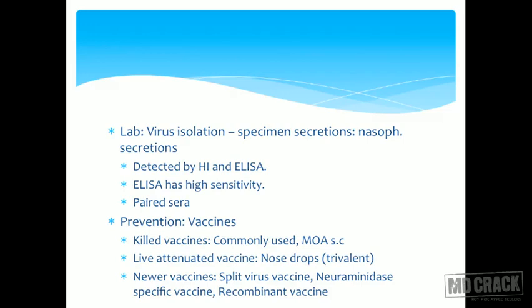For laboratory investigations, virus isolation is done from nasopharyngeal specimens. The tests used are the hemagglutination inhibition test and ELISA, with ELISA being more sensitive. Paired sera can be used, and a four-fold rise in antibody titer is taken to be of diagnostic value.